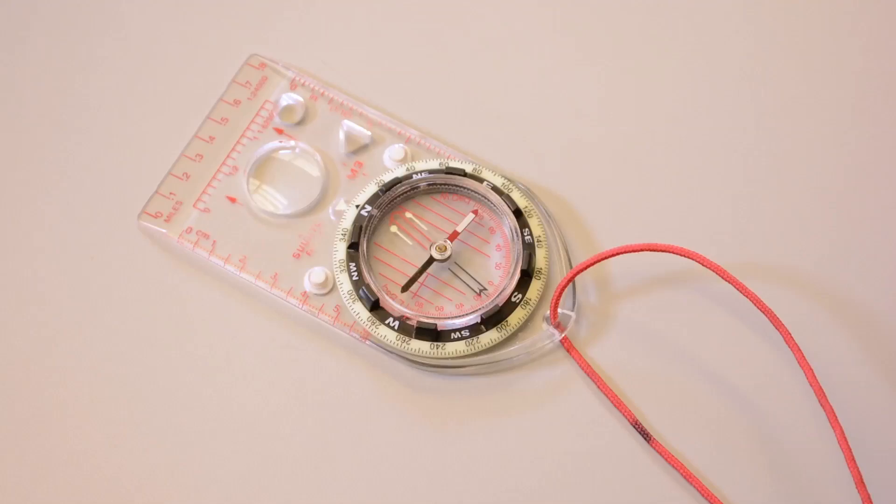With that in mind, let's have a look at my favorite compass, the Suunto M3. Suunto, a company from Finland, has been making compasses for decades. The M3 model is simple, has all the features you need, and costs about $35.